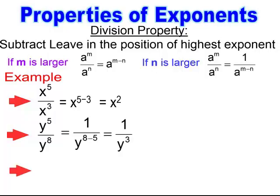When you have the same thing over the same thing, this is the property of 1. If I subtract the exponents, I get a 0 power, and anything raised to the 0 power equals 1. Also, the division property for fractions is when you have the same thing over the same thing, it equals 1. This is where the 0 property comes into play — when you divide the same thing over the same thing, you get 1.